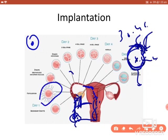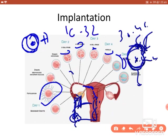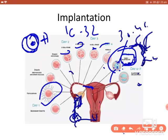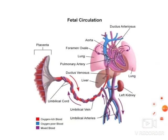Fertilization happens on day one. The one-cell stage divides into two cells, then two to four, four to eight, eight to sixteen, and sixteen to thirty-two cells. The sixteen to thirty-two cell stage is called the morula — these are undifferentiated cells. The morula then changes to form the blastocyst, which has differentiated outer cells, inner cells, and a cavity. The blastocyst gets implanted into the body of the uterus — called implantation — on day six or seven.